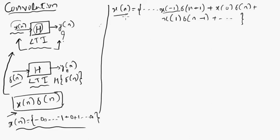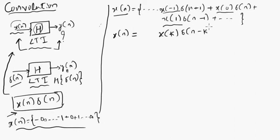Here, x[-1] is the value of x[n] at position -1, x[0] is the value of x[n] at position 0, and x[1] is the value of x[n] at position 1. We can rewrite this compactly as: x[n] = Σ x[k]·δ(n-k), where k ranges from minus infinity to plus infinity.